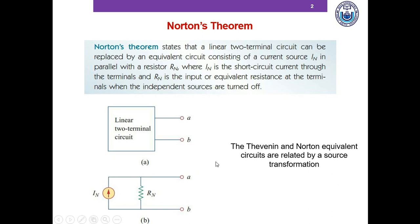Norton's theorem basically states that a linear two-terminal circuit can be replaced by an equivalent circuit consisting of a current source IN in parallel with a resistor RN, where IN is computed by computing the short circuit current through the terminal. And RN, the Norton resistance, is the equivalent resistance of the terminal when we turn off all the independent sources. In order to compute the Norton current, we just short circuit terminals A and B and measure the current flowing through the short circuit.